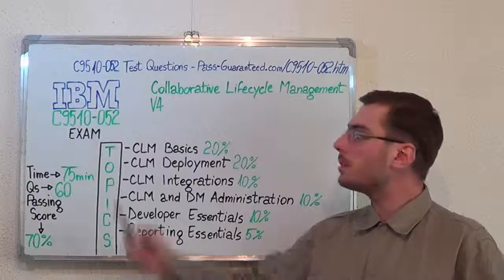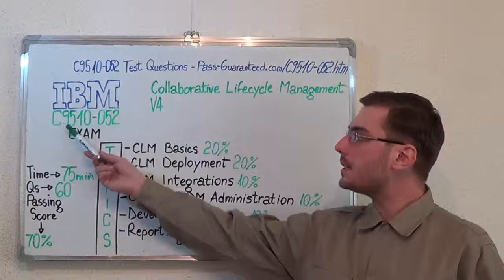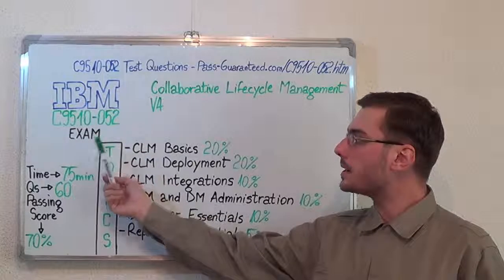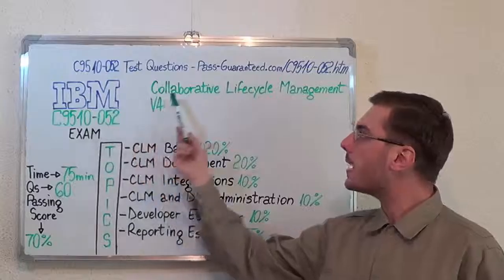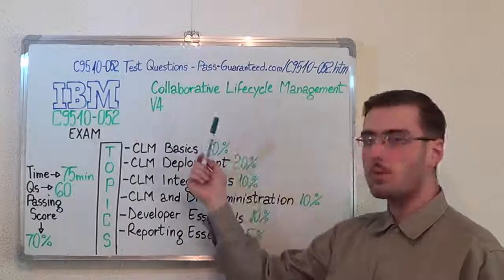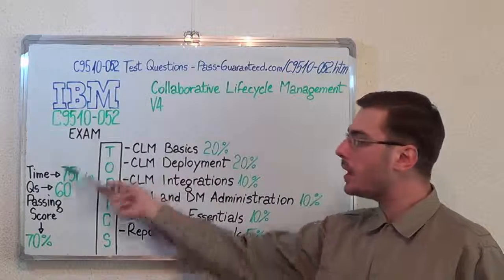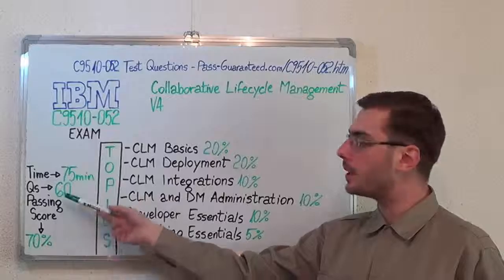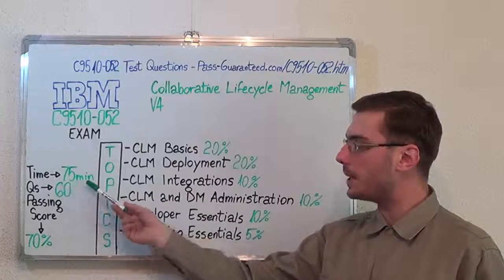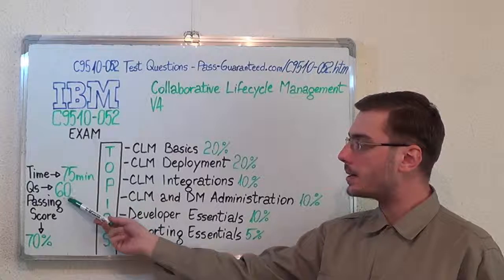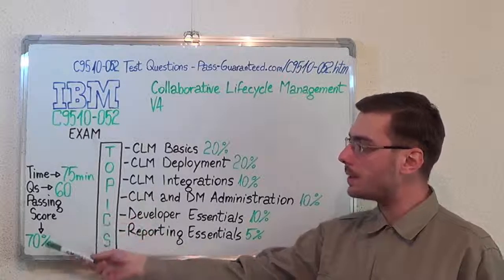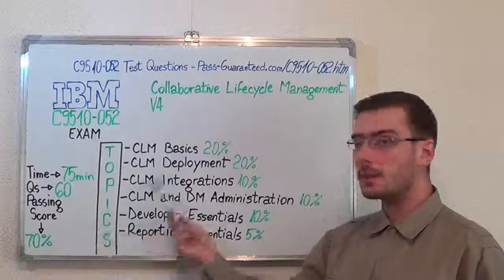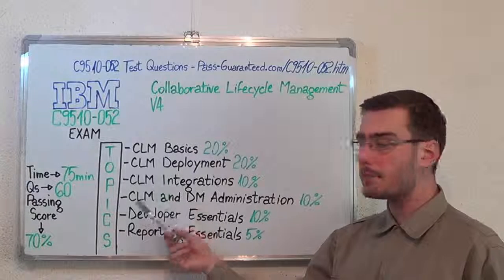Hello everyone, today I present you the IBM C9510-052 Exam, Collaborative Lifecycle Management v4. Here we have some basic test information. The duration of this exam is 75 minutes, there are 60 questions, and the minimum passing score is 70%. Now let's move on to the exam topics.